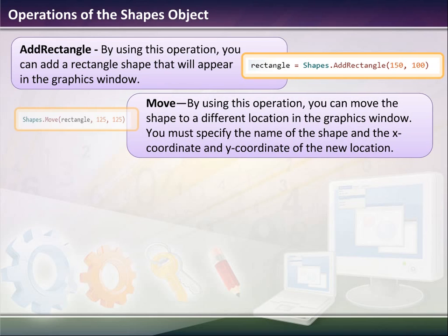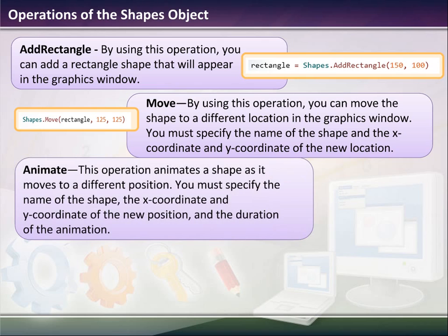If I add a rectangle, I can also move the rectangle, and this is very similar to moving the turtle, except you'll see the image move. We can animate its shape, which moves to a different position. You must specify the name of the shape and the x and y coordinate of the new position and the duration.